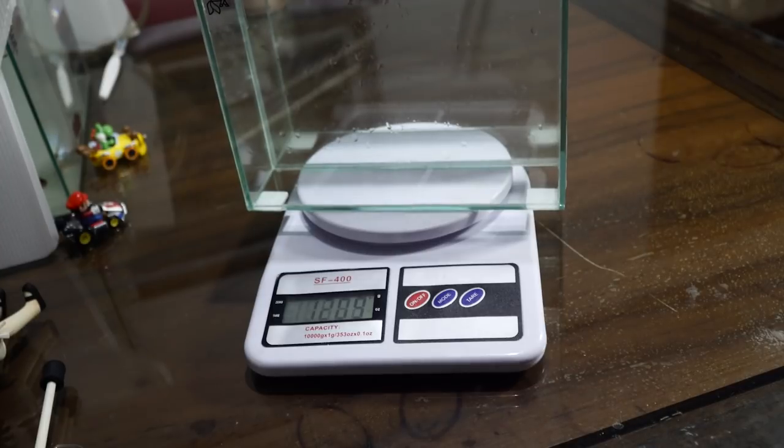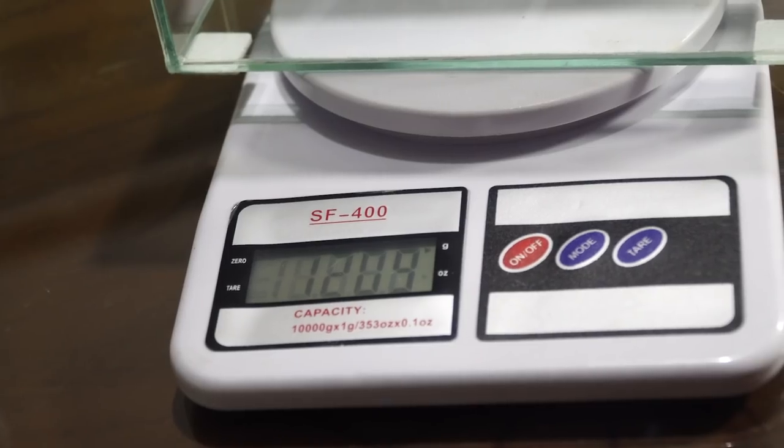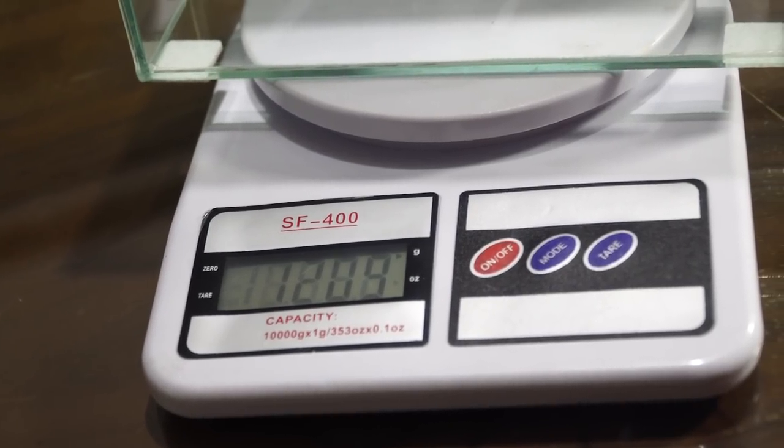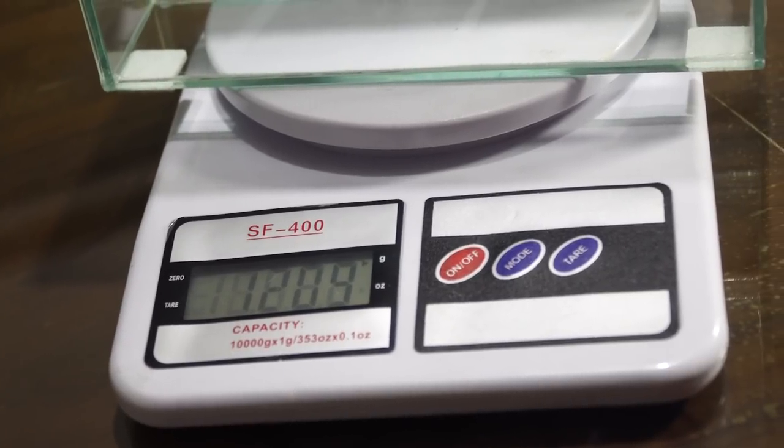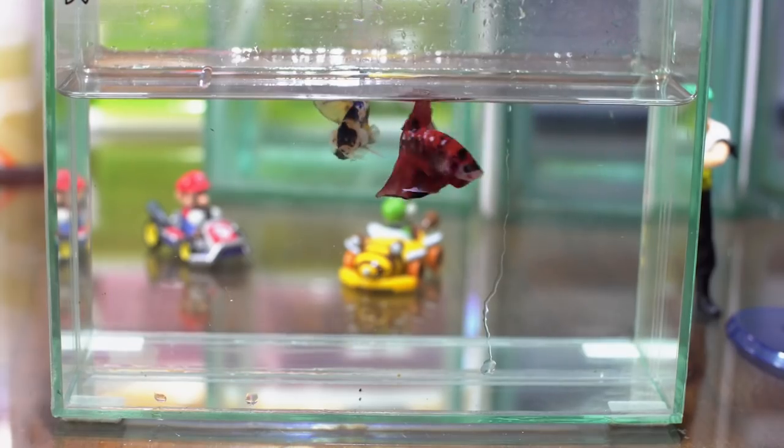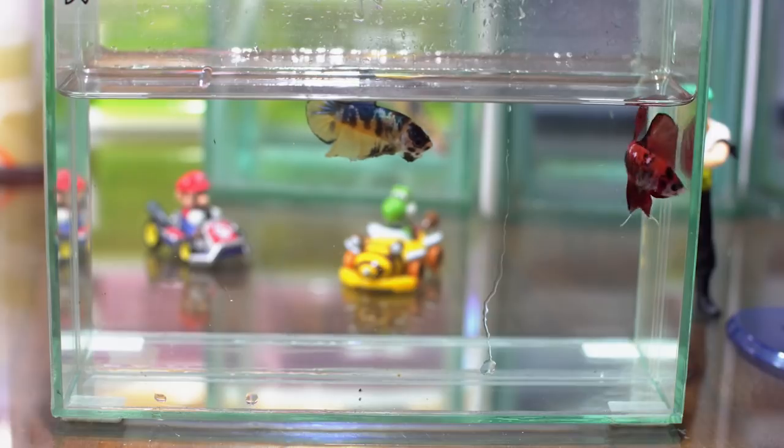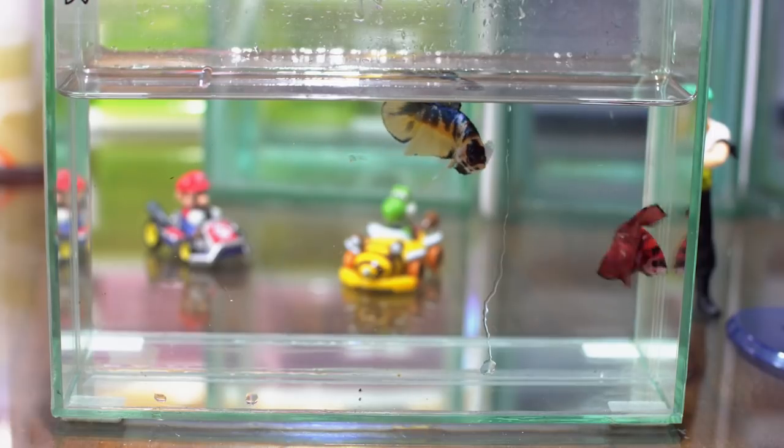Yang paling menyenangkan dari pemilihan ketebalannya adalah bobotnya jadi ringan. Karena kan aquarium foto ini kan sering kita pindah-pindah. Jadi kalau rada berat itu bikin males. Kalau teman-teman berpikir, ah bang dari 4mm ke 3mm apa begitu jauh sih? Ya gue bilang ini ngaruh banget. Ini kelihatan kok ringan banget.